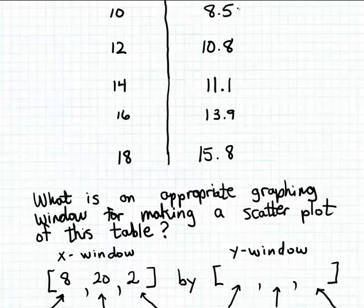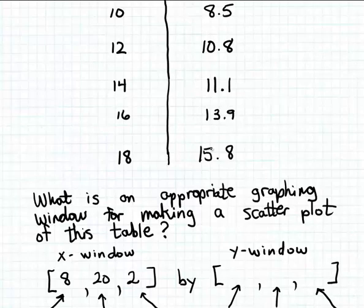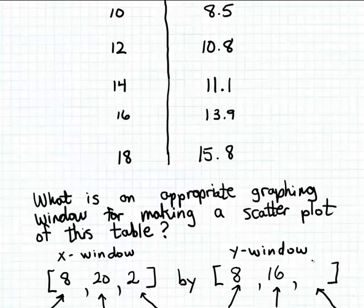For the Y window, the minimum Y value in the table is 8.5 and the maximum is 15.8. I'll give a little room on the top and bottom, using a minimum Y value of 8 and a maximum of 16. For the Y scale, I'll use 1 — just for variety, even though this means drawing more tick marks along the Y axis.